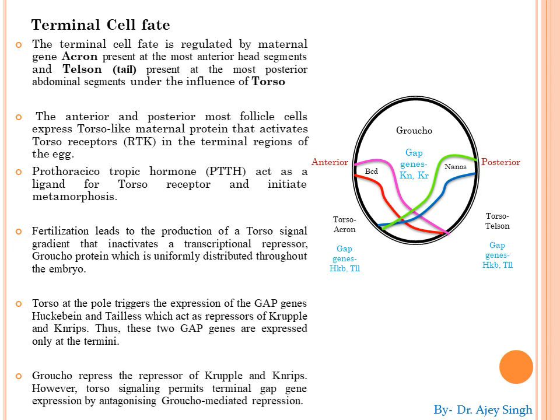Torso protein के लिए nurse cell messenger RNA provide करती है, और torso protein activate करती है torso receptors को। ये torso receptors RTK type के receptors होते हैं, and they are present at the terminal region of the egg. Proto-thoracotropic hormone, that is PTTH, acts as a ligand for the torso receptor, और जब ligand torso receptor से bind होती है, तो ये initiate करता है metamorphosis को। Fertilization leads to the production of torso signal gradient that inactivates a transcriptional repressor, that is Groucho।